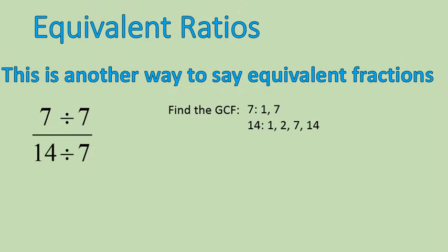The largest number that is in both of those lists is seven. That means that seven is our greatest common factor. So, you divide the top, top divided by seven, and the bottom divided by seven, and you get your equivalent ratio, or your equivalent fraction. So, seven over fourteen is equal to one-half. In other words, if you have a ratio of seven to fourteen, it's the same as having a ratio of one to two.